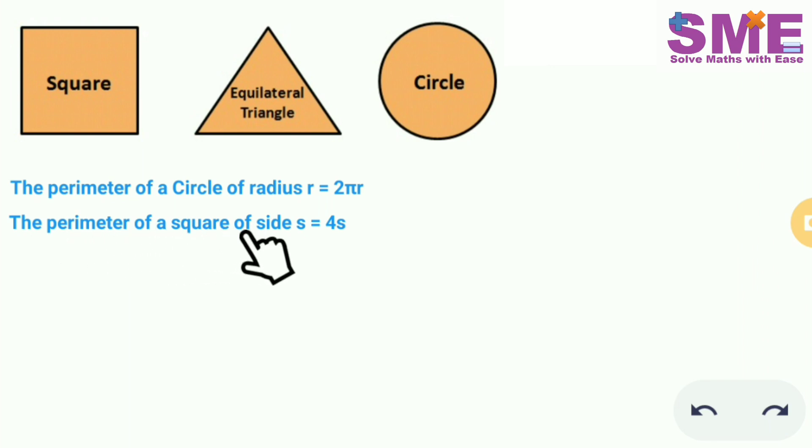The perimeter of a square of side s will be equal to 4s, and the perimeter of an equilateral triangle of side a will be equal to 3a.